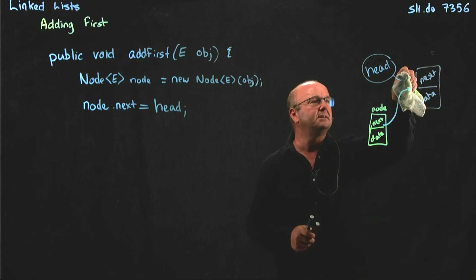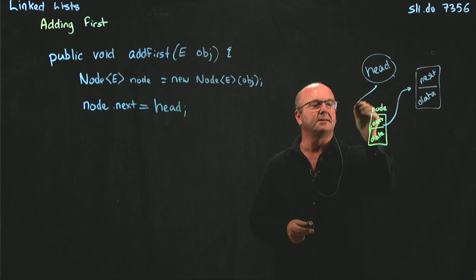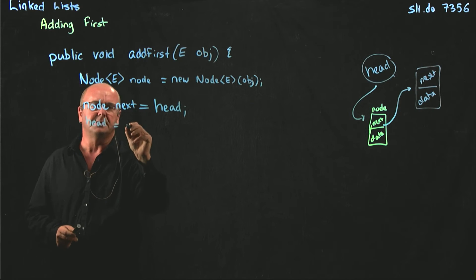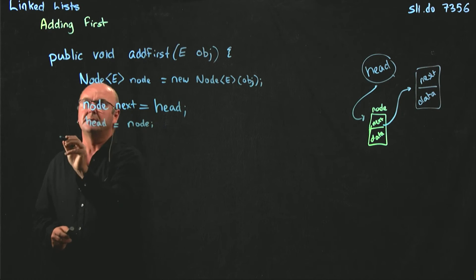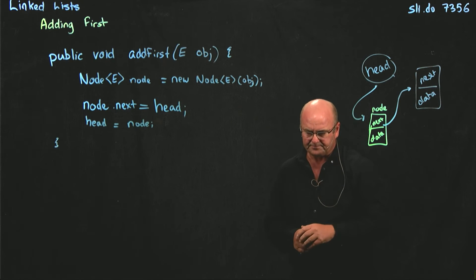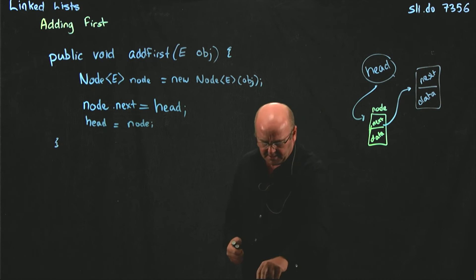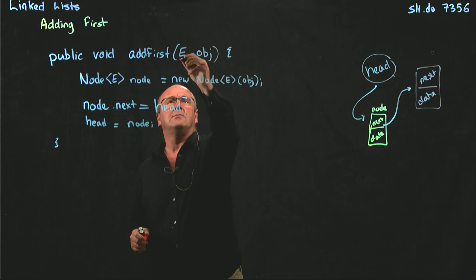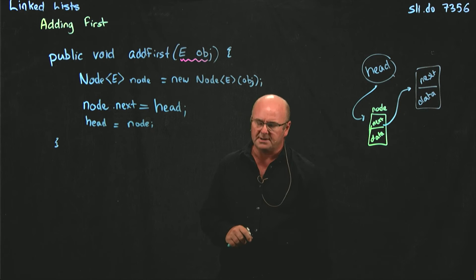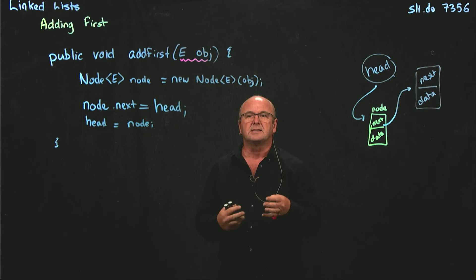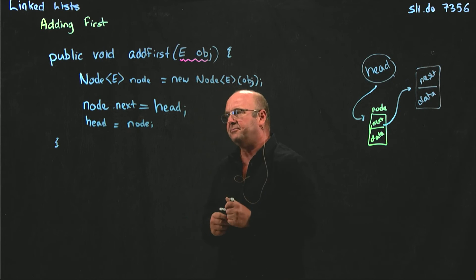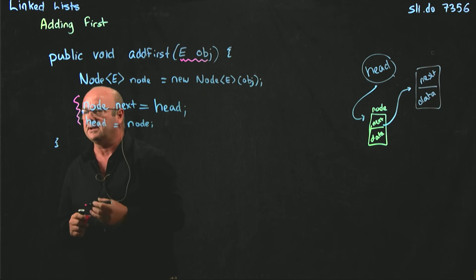And now we take our head pointer and we move that to point to our new node. Notice when we do this that we're just adding E's. We don't care what E's are, we're not involved in that. We just put them in our node class and that's handled by our inner class.